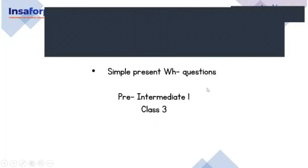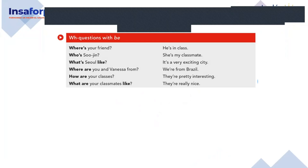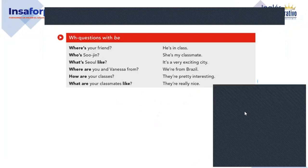We're going to do a little bit of review with WH questions. Yesterday we were working with questions using WH words and the verb to be. We have 'where,' 'whose,' 'how,' and 'what.' One key thing: when do we use 'where'? Brenda, para qué utilizamos 'where'? Ubicación — exactly, for places. Very good, we use 'where' for places.